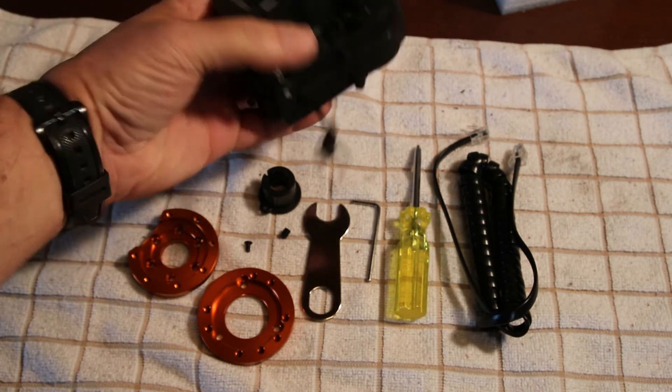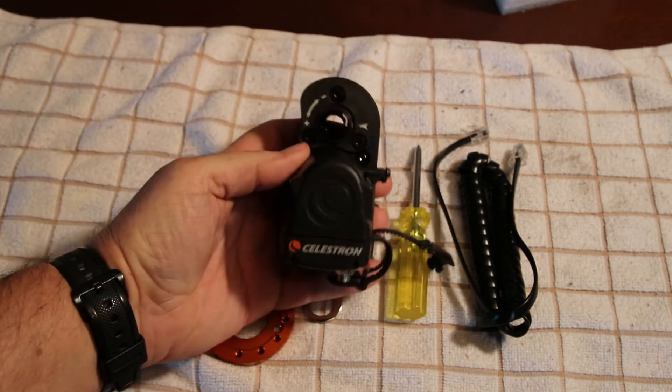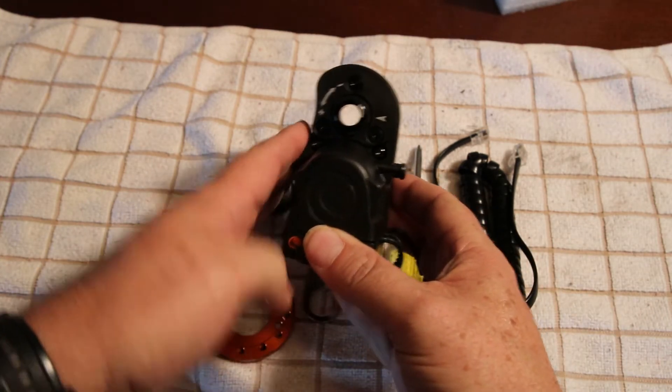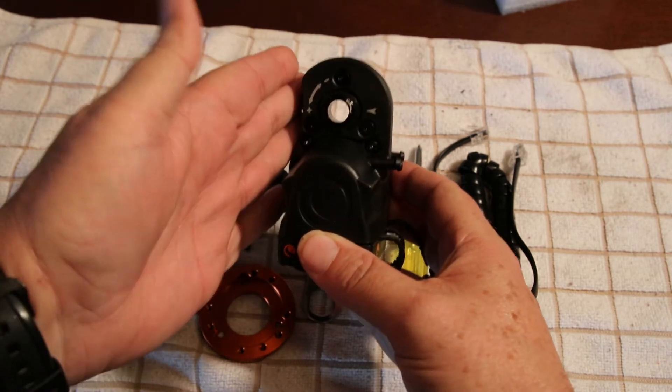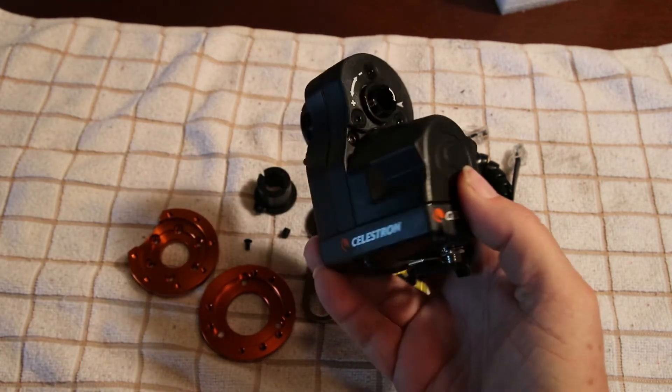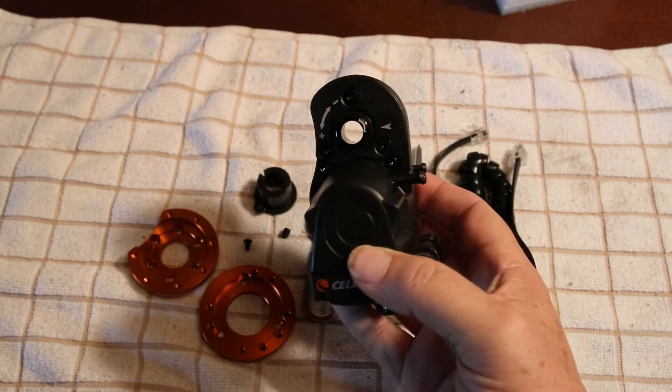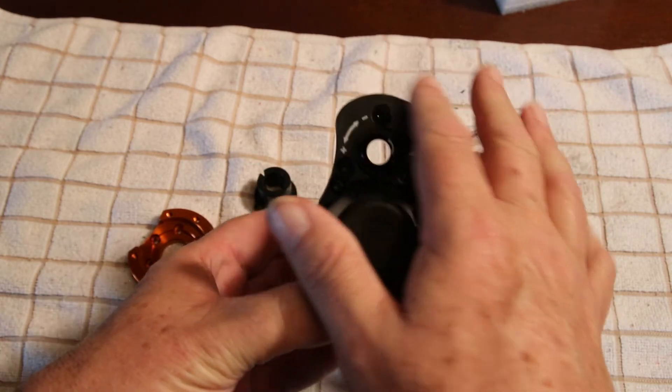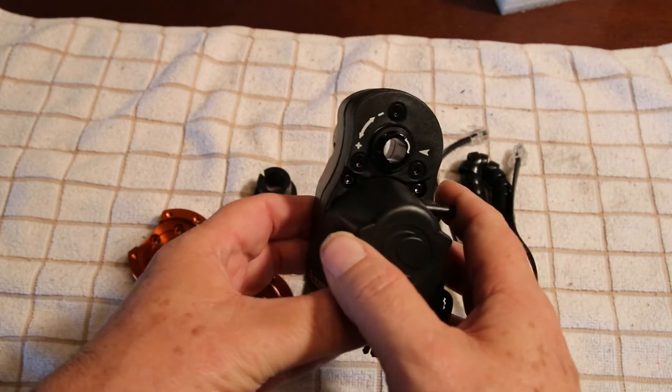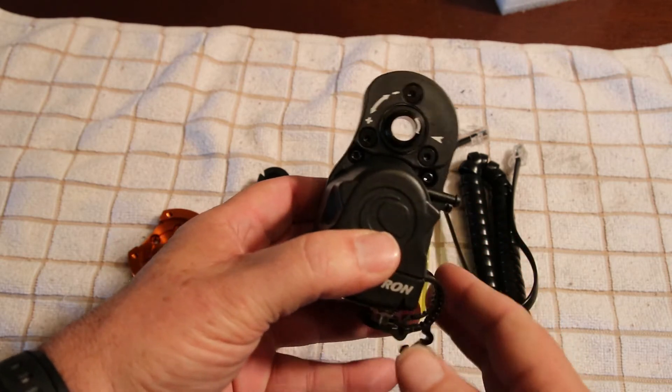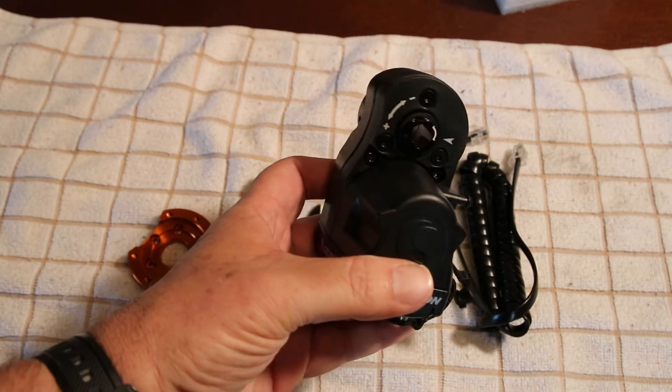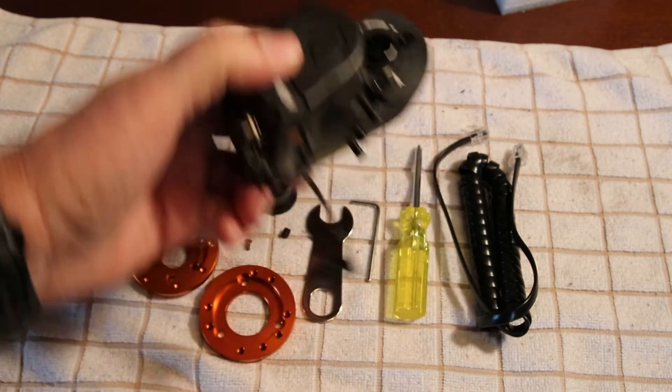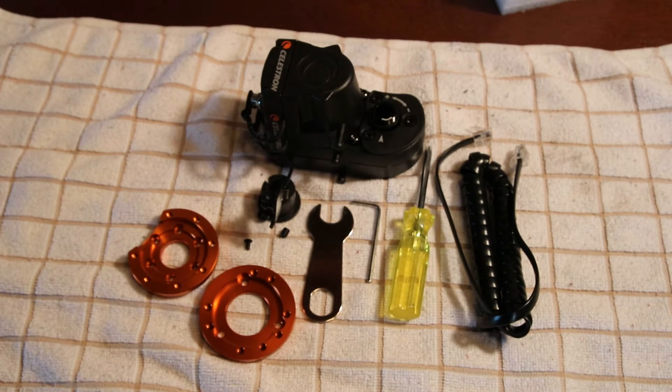And of course you have the Celestron motor itself. And if you notice, this one has got a curve cut into it. And that is the new design for the 9.25 edge HD telescopes. The older style, both sides look the same as it goes around the top, and it won't fit on the 9.25 SCTs from my understanding. But this allows it to fit on the SCT 9.25. Alright, and there we have all the parts. So, let's get to installing.